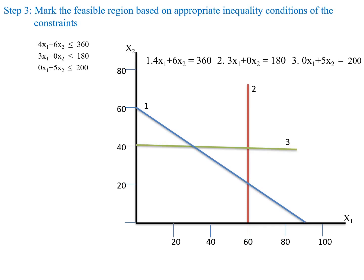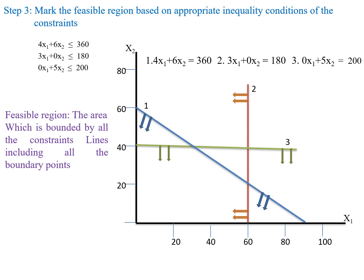The next step is to mark the feasible region based on the inequality conditions. All constraints have less than or equal to inequality, so mark the region below each constraint line. If any constraint had greater than or equal to inequality, we would consider the region above the line. The feasible region is the area bounded by all constraint lines — the common region satisfying all constraints.